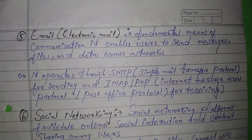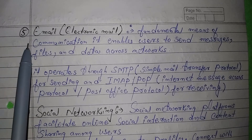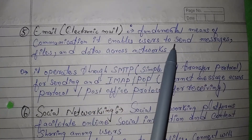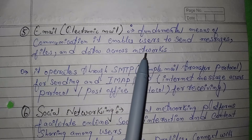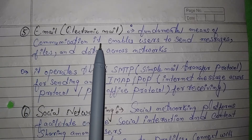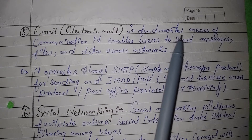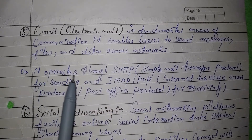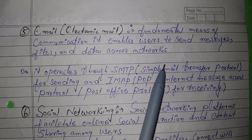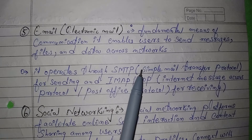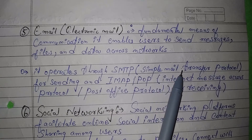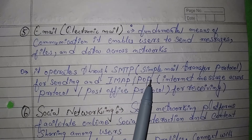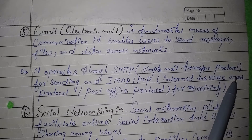The fifth application is Email, which stands for Electronic Mail. It is a fundamental means of communication that enables users to send messages, files, and data across a network. It operates through SMTP, that is Simple Mail Transfer Protocol, for sending, and IMAP or POP, that is Internet Message Access Protocol or Post Office Protocol, for receiving.